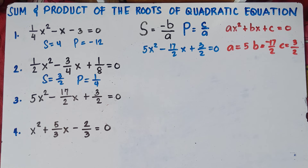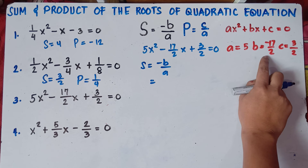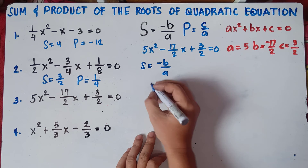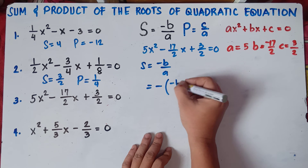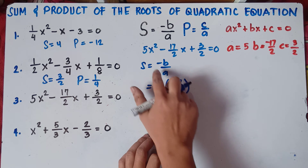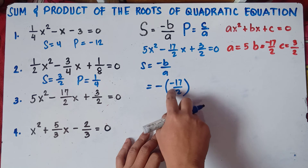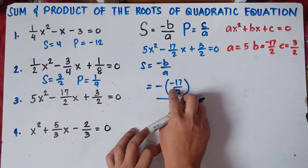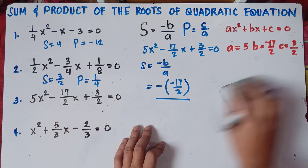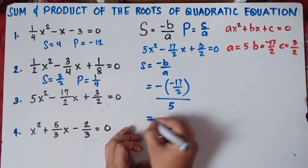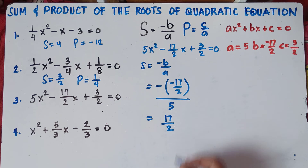Use the formula. Sum equals negative b over a. Our b is negative 17/2, so copy the negative sign from the formula, then put negative 17/2 in parenthesis because we have two negatives. We're not allowed to have two negatives close to each other — we need to multiply them. And our a is 5. Negative times negative gives positive 17/2 divided by 5.